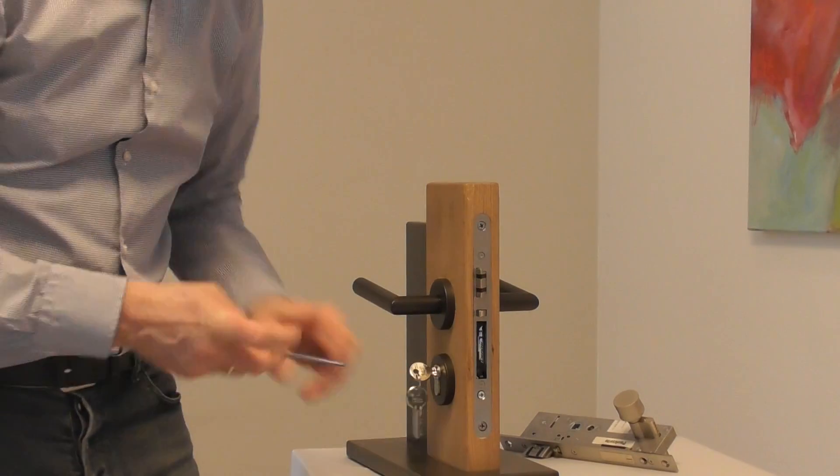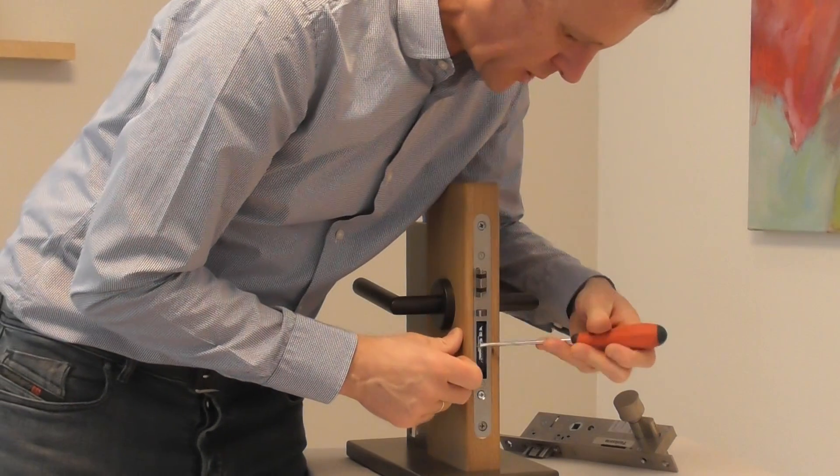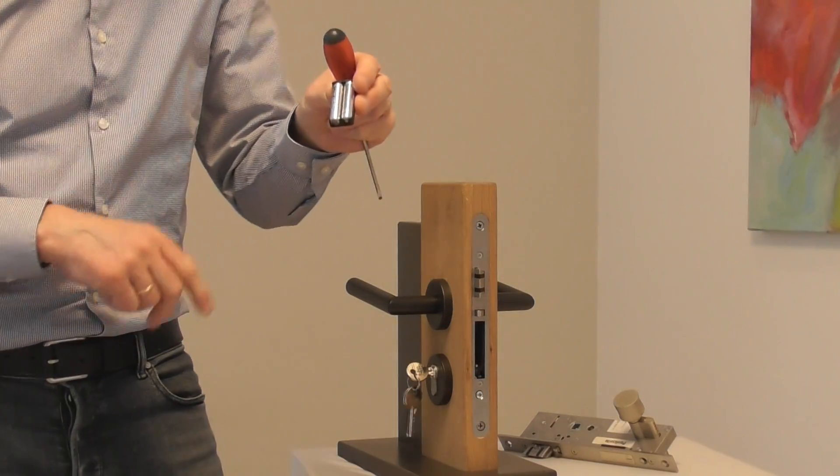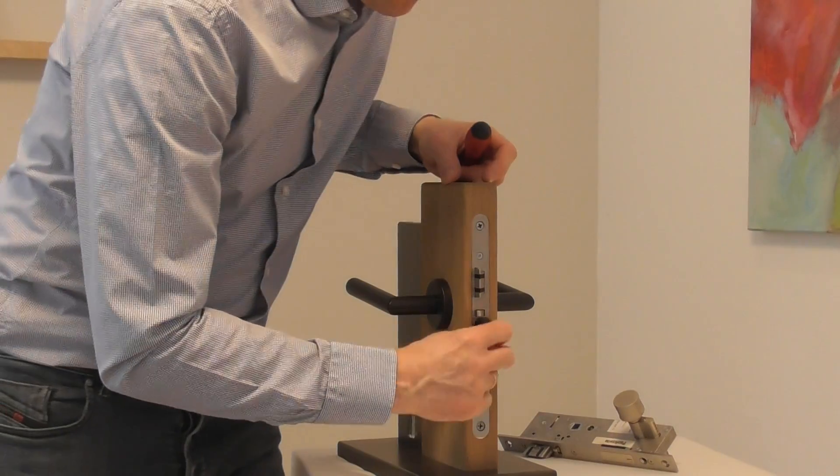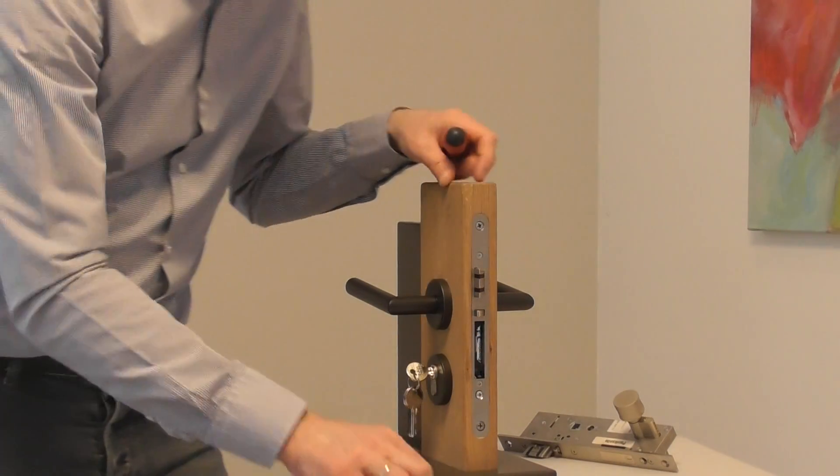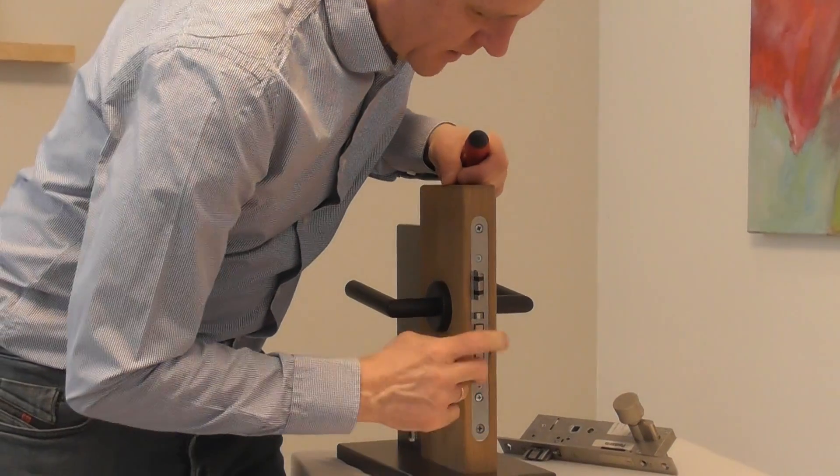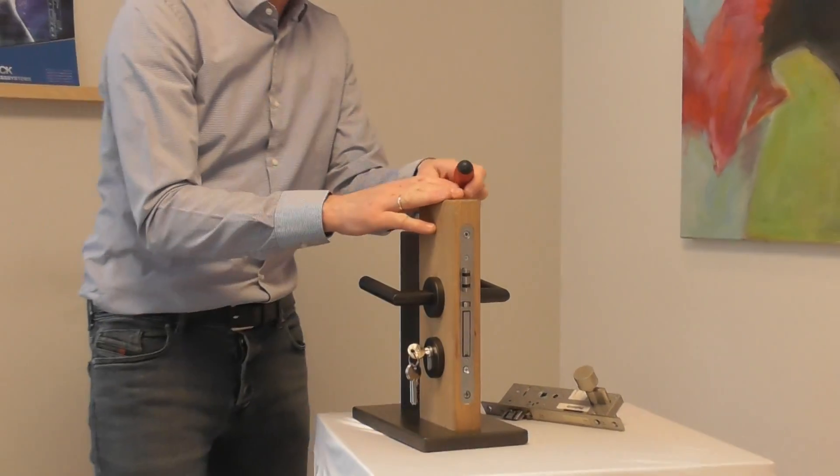You can see the cover now. Now it's possible to change the batteries - that means pulling them out, putting in the new batteries, and closing the cover again. That's it. So it's really very simple.